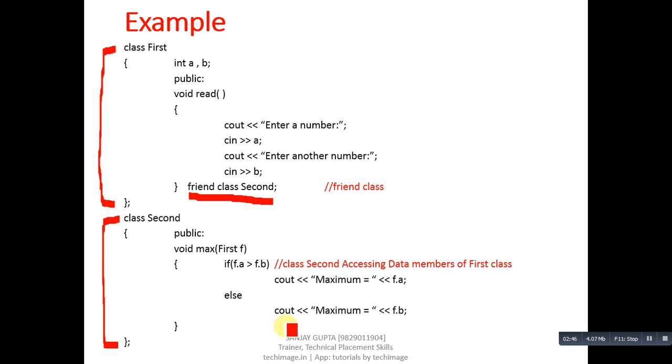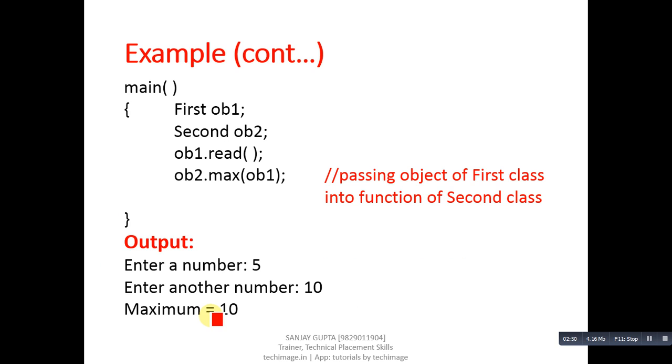Now coming on to main function. Inside main function there are total two objects, ob1 and ob2. Ob1 is of First class and ob2 is of Second class. Then ob1.read is called.